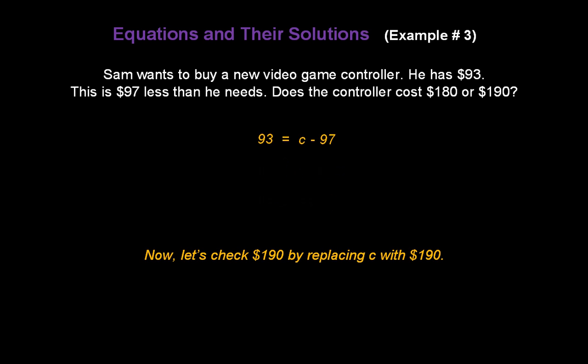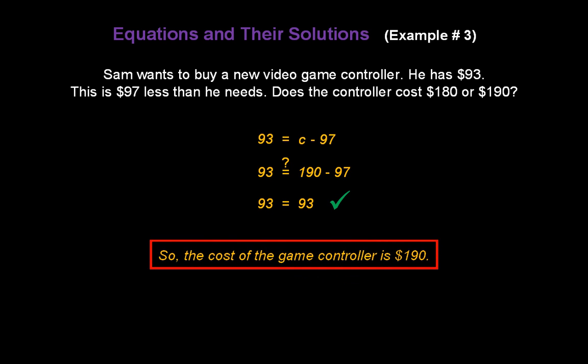Now let's check $190 by replacing C with 190. Does 93 equal 190 minus 97? Solve the right-hand side. And we find that 93, does that equal 93? The answer is yes. Obviously, 93 equals 93. And so the cost of the game controller is $190.